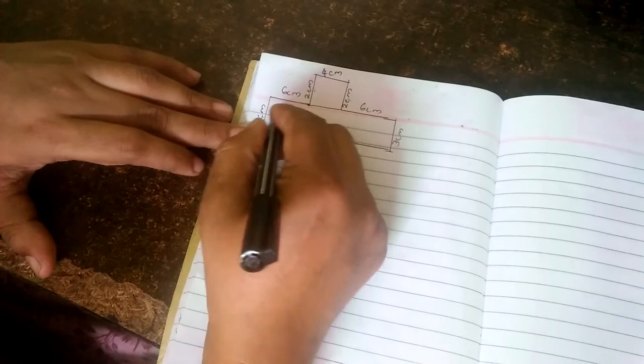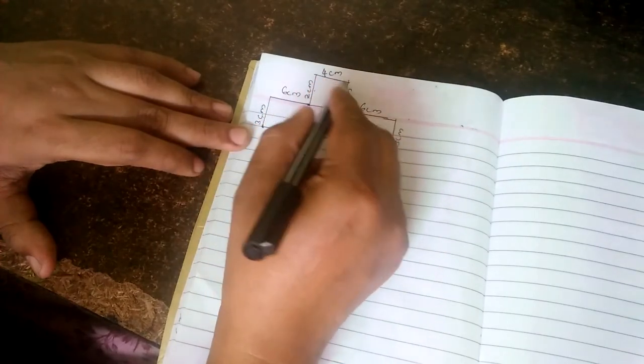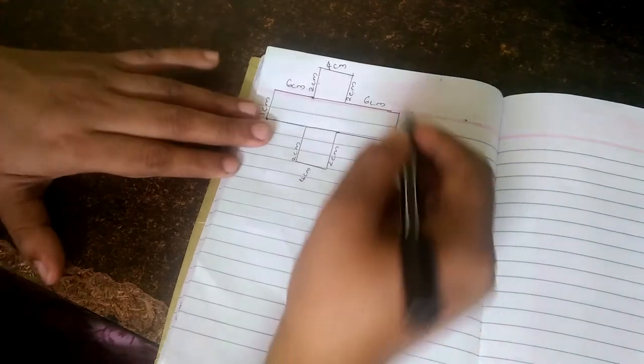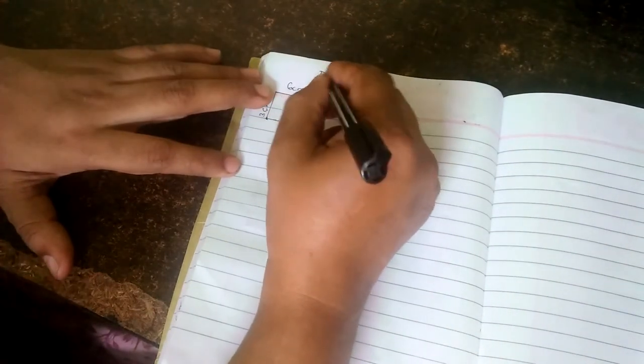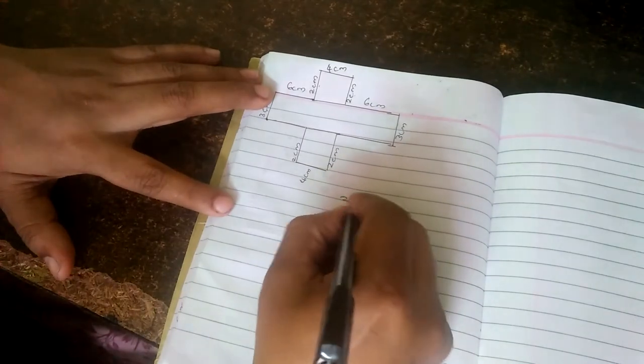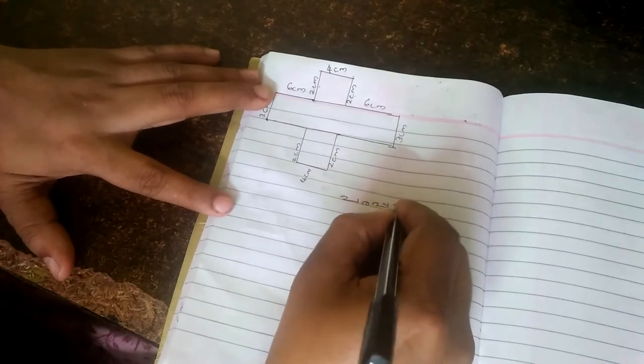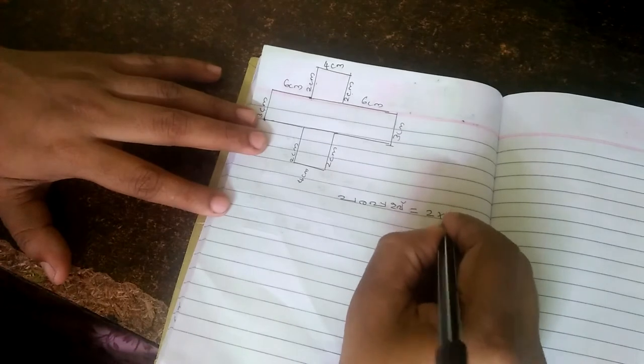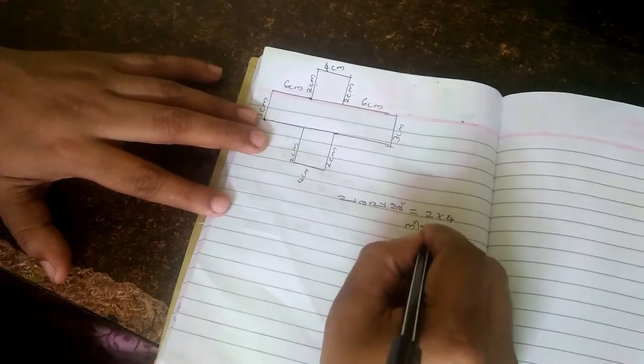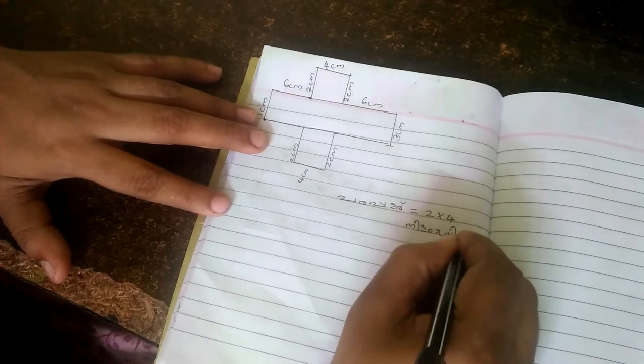This is 3cm. This is 1cm. This is 2cm. 4cm. 4cm, 2cm, 4cm, 4cm. 4cm.